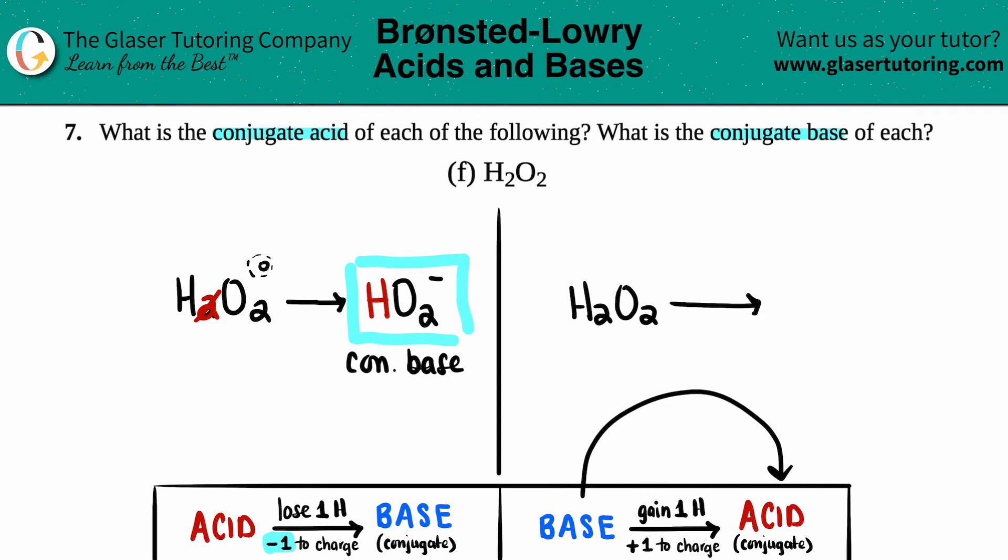Remember, the acid always has one more hydrogen. So you're going to gain one hydrogen. So if you had two, and now you're turning it into the conjugate acid, you got to bump this number up one. So instead of H2O2, it would be H3O2.